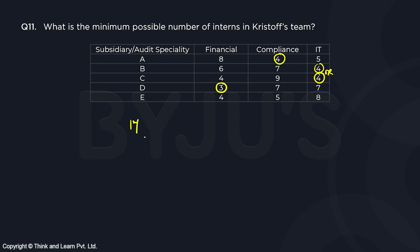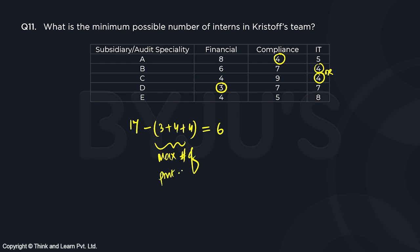Out of a total of 17 members, if we have 11 permanent members — three in financial, four in compliance, and four in IT — the minimum number of interns will be six. So the answer is six. Since it's a TITA question, we type in six.